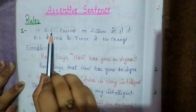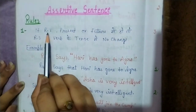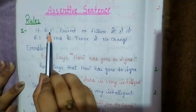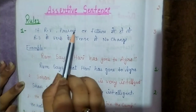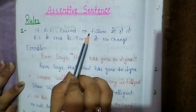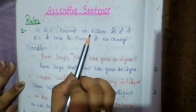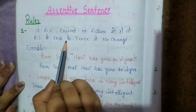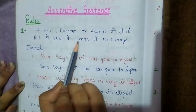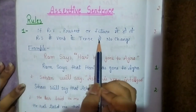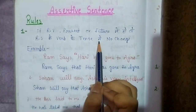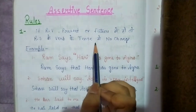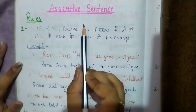The first rule of assertive sentences: RV means reporting verb. If the reporting verb is in present or future tense, then in the reporting speech, there will be no change in the verb tense. Whatever tense the reporting speech has, we will not change it. That is the rule of assertive sentences.